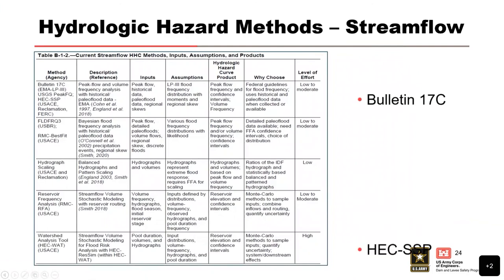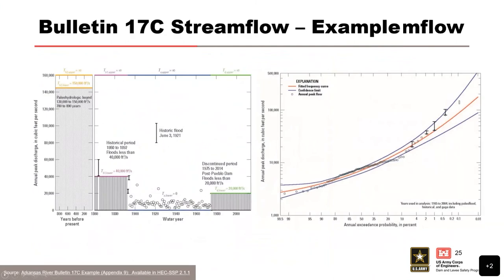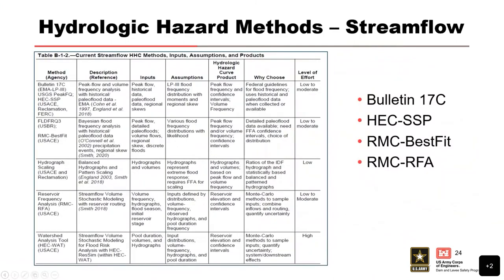There are charts listing different methods for using streamflow in hydrology. I want to highlight two: RMC Best Fit, a Bayesian software for flow frequency analysis available on the RMC website under the software page, and RMC RFA, a software that develops hydrologic hazard curves. Those are nice pieces of software, and training videos are available on the RMC website.